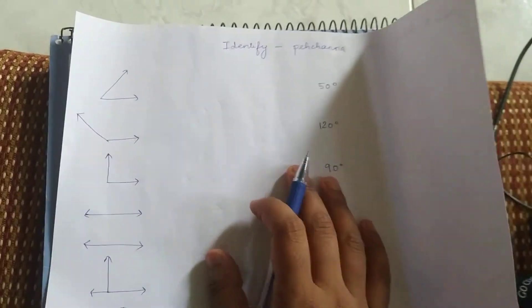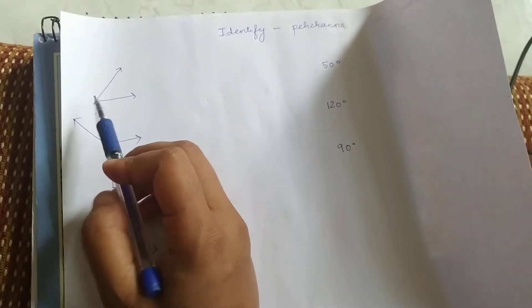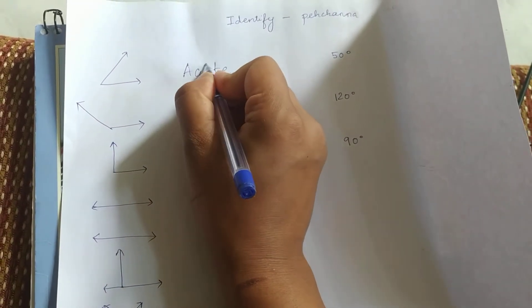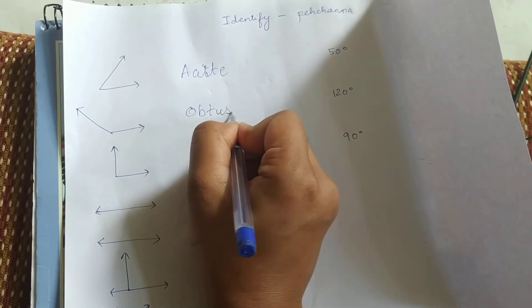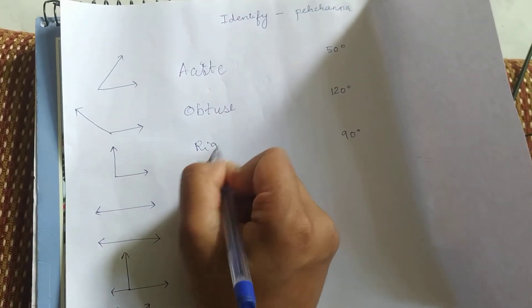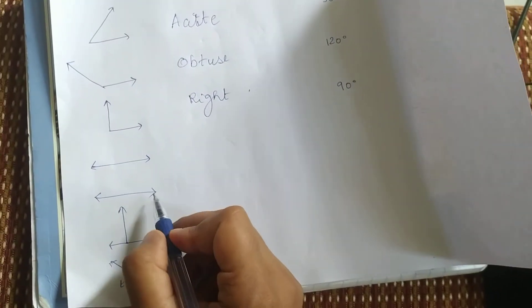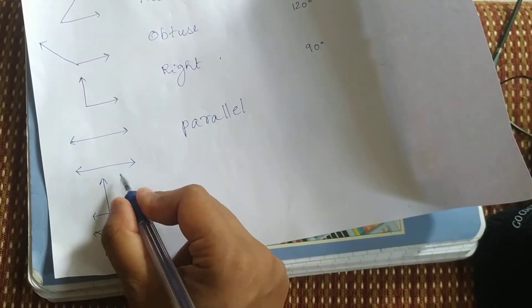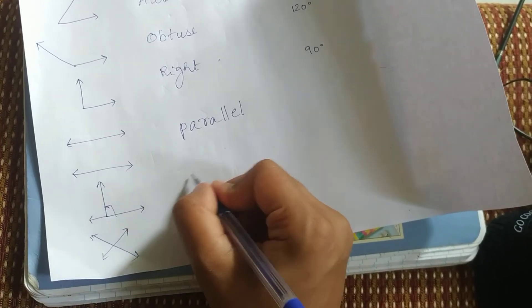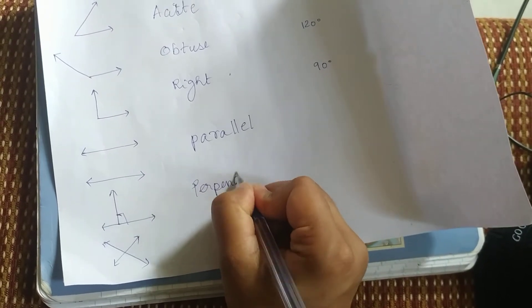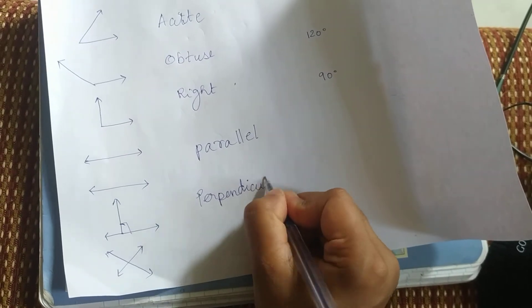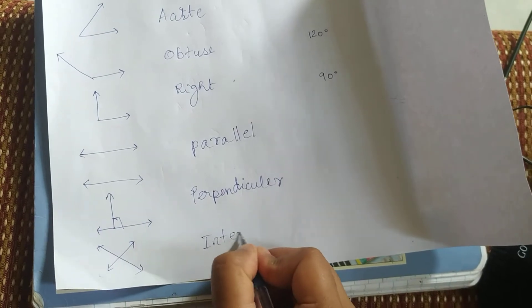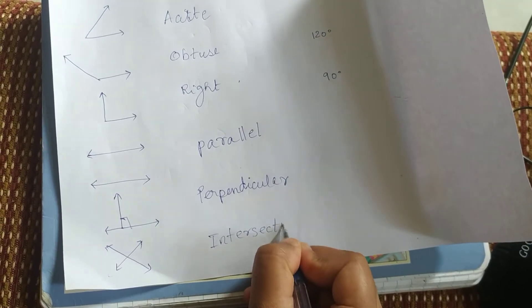Next, we have identifying angles. Identify means to understand. If we see some angles, this is acute. This is obtuse. This is right. Which lines are parallel lines? This is perpendicular. And these two lines cross each other, so these are intersecting.